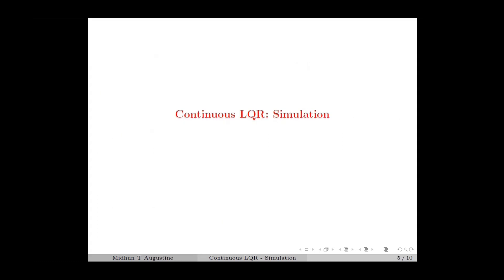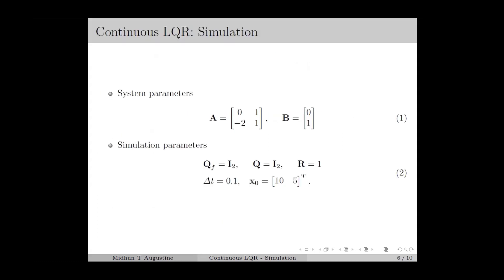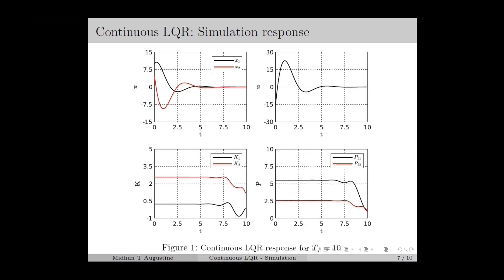Next we move on to the simulation of continuous LQR, in which we consider an LTI system with system matrix and input matrix as given in equation number 1. The simulation parameters are chosen as in equation number 2, in which we select the simulation step size as 0.1. For this LTI system, the response with continuous LQR for a time horizon tf equal to 10 is given in Figure 1, which shows the plots for the states, control input, elements of the feedback gain matrix, and diagonal elements of the cost matrix.